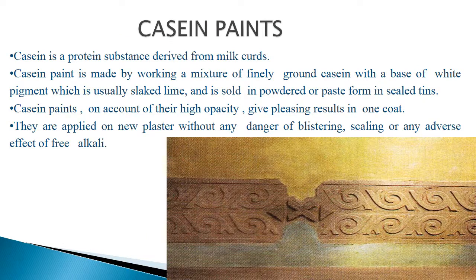Casein-based distemper uses casein, a protein substance derived from milk curds. It is made by working a mixture of finely ground casein with a base of white pigments such as slaked lime, and is sold in powdered or paste form in sealed tins. Due to its high opacity, it gives pleasing results in one coat and can be applied on new plaster without danger of blistering, scaling, or adverse effects of free alkali.